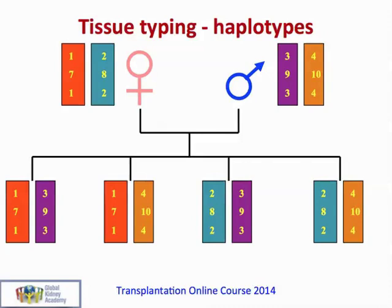We inherit our HLA haplotypes from our parents. The mother has one particular haplotype — shown simply for HLA-A, HLA-B, and HLA-DR — and gives one haplotype to each offspring. The father equally has two haplotypes inherited from his parents and splits them between his offspring, so that among any four offspring there are likely four different outcomes. This means that if a transplant recipient requires a donor from a sibling, there is approximately a one-in-four chance that any sibling will be a two-haplotype match, and also a one-in-four chance of a two-haplotype mismatch.